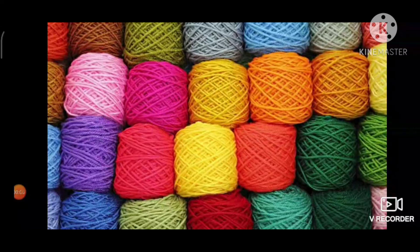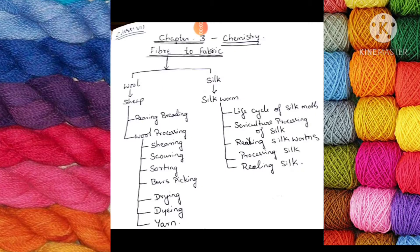Oh, how colorful it is! These are the wools which we get from sheep. Fiber to fabric — in this chapter we are going to see about two animals. We can consider one as an insect. From these two animals we are going to get the fibers to prepare the fabric, and we will learn the different steps or processes involved.